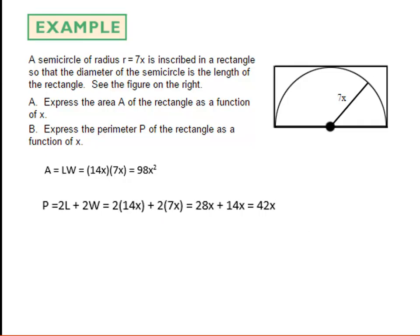In all of these examples, when calculating a function of one variable, the key is to start with the general piece of knowledge. Start with: area is length times width. Then for that scenario, figure out what length and width are in terms of that one variable. That's the hard part. Same for perimeter — what's the perimeter of a rectangle? 2l plus 2w. Then make the leap to one variable. It takes a lot of practice, so be patient with yourself.